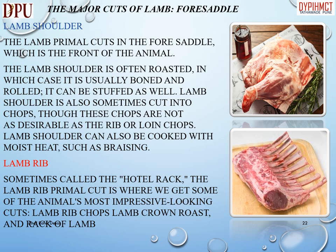The major cuts of lamb — foresaddle: the lamb shoulder is often roasted, in which case it is usually boned and rolled. It can be stuffed as well. Lamb shoulder is also sometimes cut into chops, though these chops are not as desirable as the rib or loin chops. Lamb shoulder can also be cooked with moist heat, such as braising.